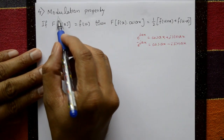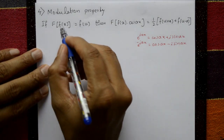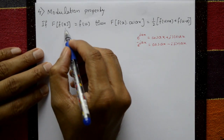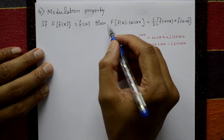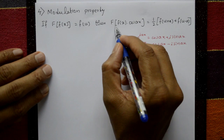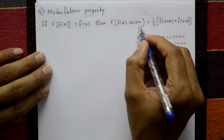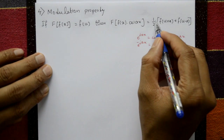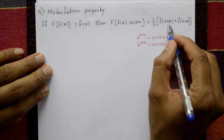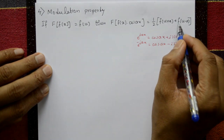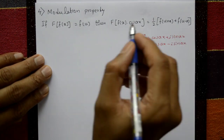Fourth property: modulation property. If F of f of x equals F of u, then F of f of x times cos a x equals 1 by 2 times F of u plus a plus F of u minus a.